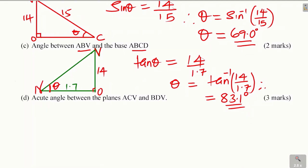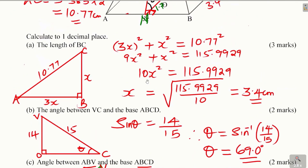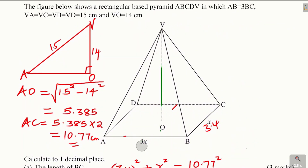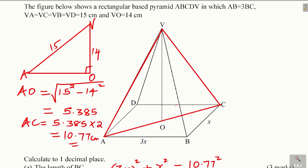Part D: the acute angle between planes ACV and BDV. Looking at the diagram, plane ACV is shown in red, and plane BDV is the other plane. When you observe these two planes, they appear to meet at right angles — they are perpendicular to one another — but the question specifically asks for the acute angle.